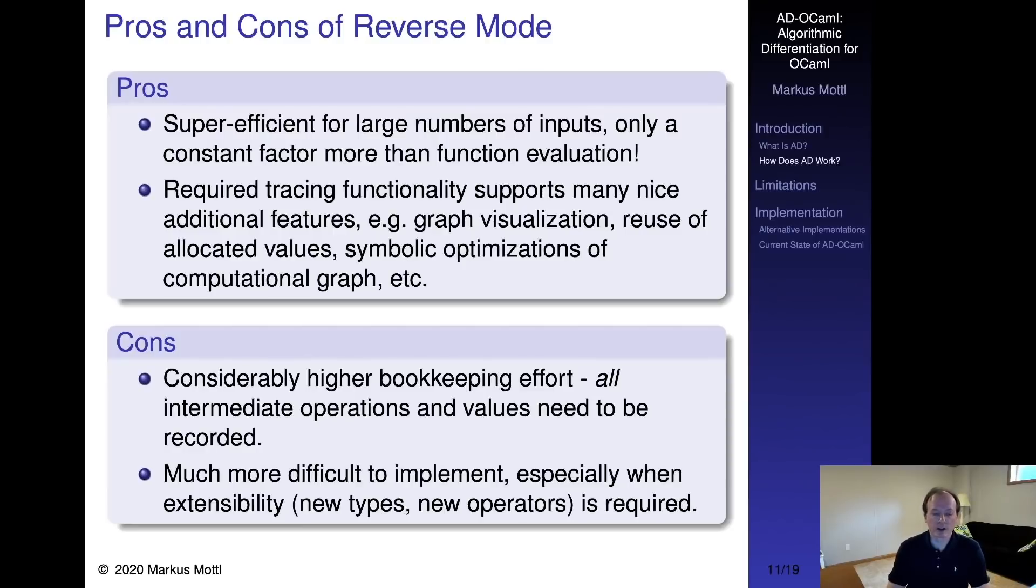As mentioned earlier, reverse mode is great for handling programs that have large numbers of inputs, but memory consumption can be a problem. It is also fairly difficult to implement correctly, especially if you want to support imperative updates, aliasing or extensibility. A nice side effect of reverse mode is that it requires accurate tracing of programs. The resulting trace is useful for many purposes, for example reusing previously allocated values, which can give a quite noticeable performance boost, or for visualizations and symbolic optimizations.